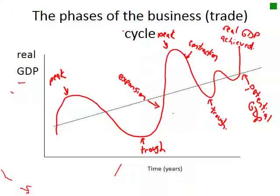What we've drawn is real GDP — the real GDP that we've actually achieved — and it is fluctuating around the potential GDP. When we are at one of the high points, this is known as a peak. When we are at the bottom, it's known as a trough.